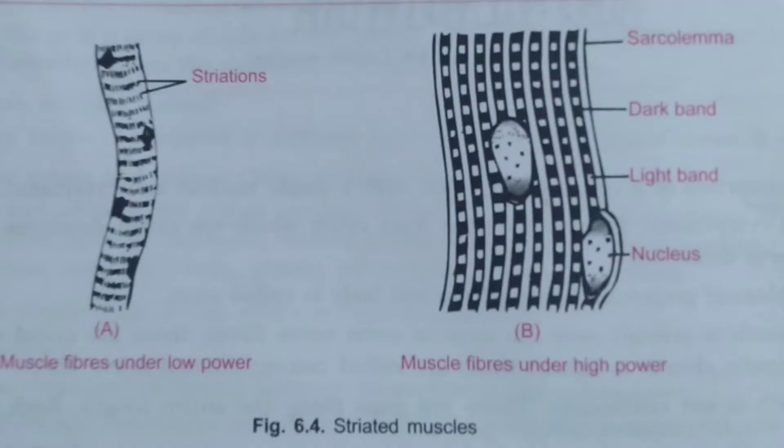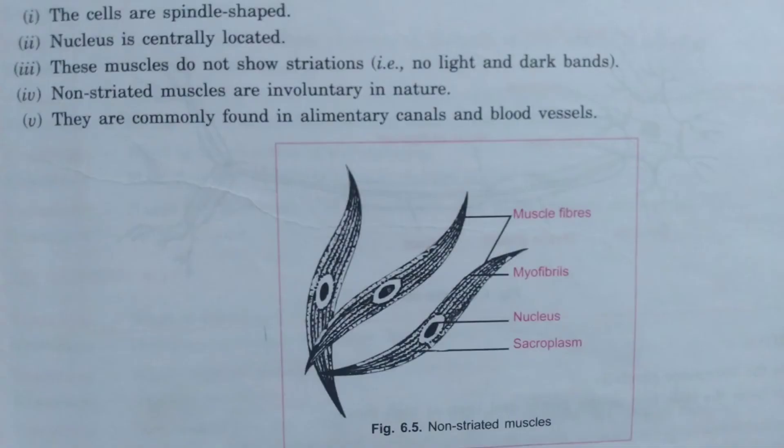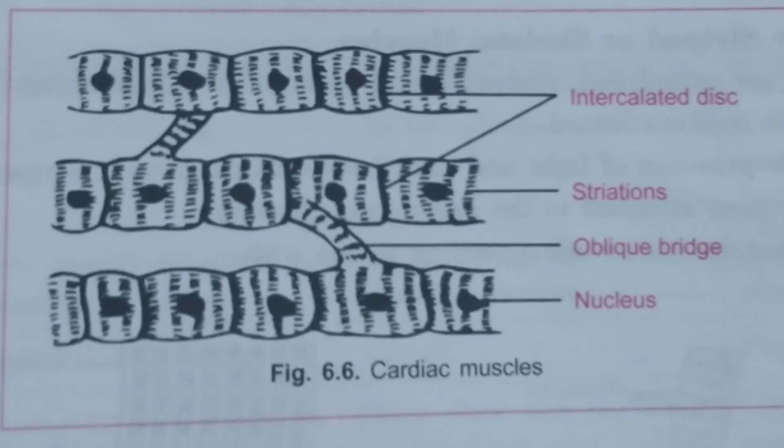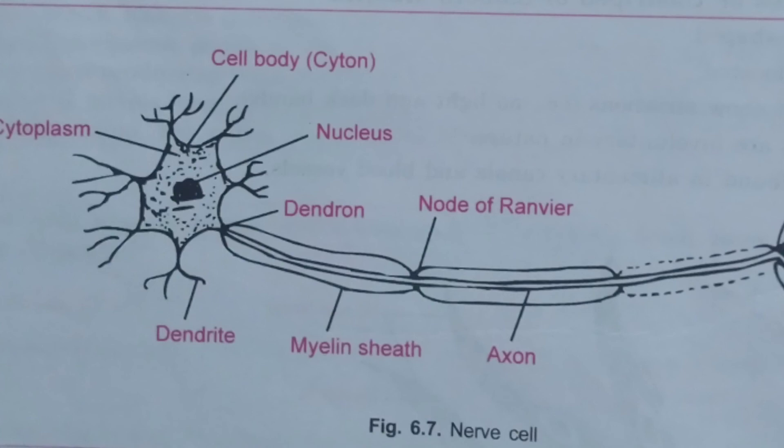This is the diagrammatic representation of striated muscles. This is non-striated muscles under the compound microscope, followed by the diagrammatic representation of non-striated muscles. This is the microscopic view of cardiac muscles under the compound microscope and its diagrammatic representation. Finally, this is the microscopic view of nerve cells under the compound microscope and their diagrammatic representation.